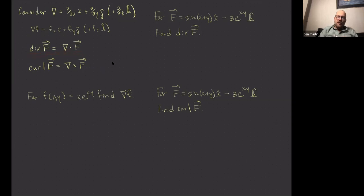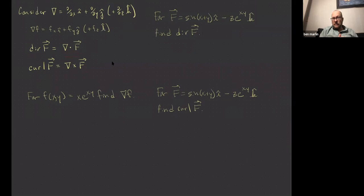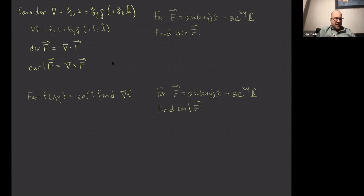Then we introduce the divergence of a vector field. That is when you have a vector field with functions of x, y, and maybe z in each coordinate. Think of it as taking the del operator and dotting it with your vector field. If you'd rather memorize whatever it says in the textbook, have a field day — just make sure you get it right, and if it gets really difficult later, expect me to say I told you so. Then there's the curl — think of that as the del operator crossed with your vector field. It'll be messy to calculate, but it's just something we calculate.